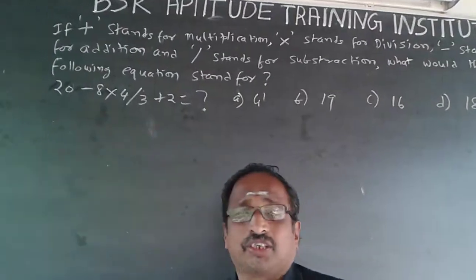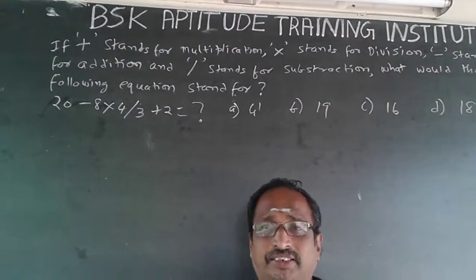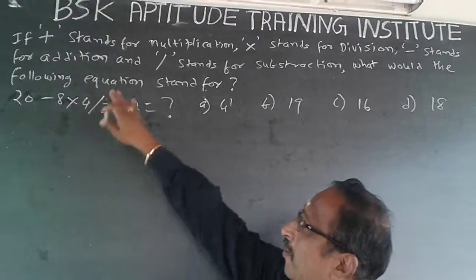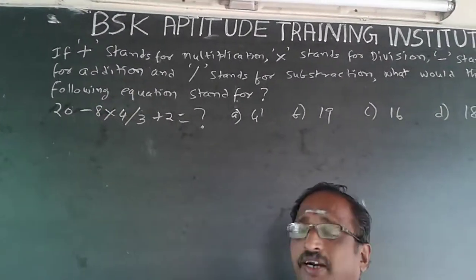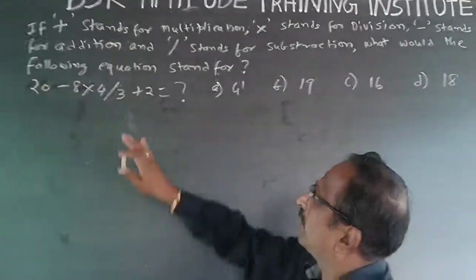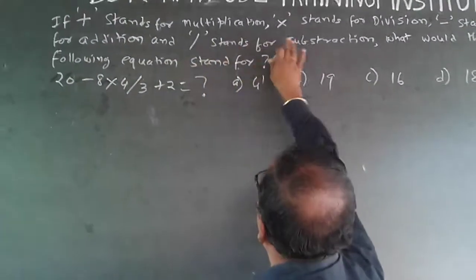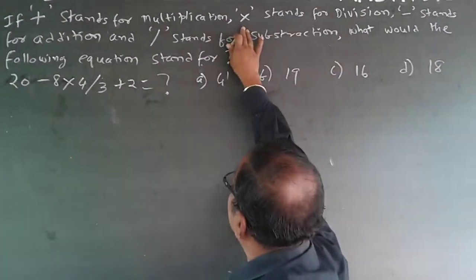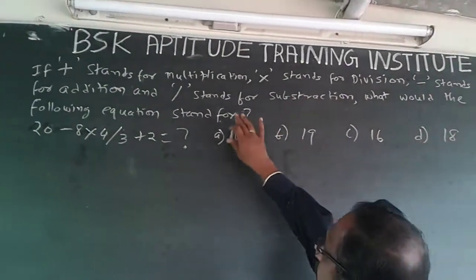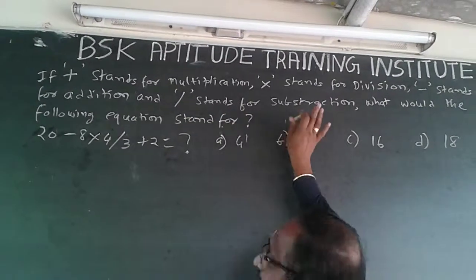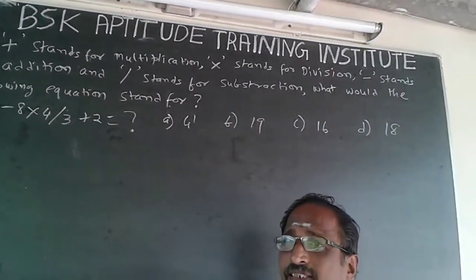So here, in this question, what is happening? If the symbols are changing, say the plus, normally we understand as plus, but it is being converted into multiplication. Similarly, the into, that is the multiplication symbol, stands for division, and minus symbol stands for addition, and division symbol stands for subtraction. The symbols are all changing...